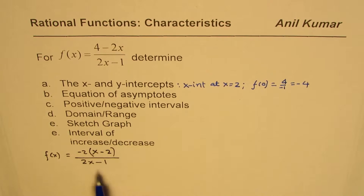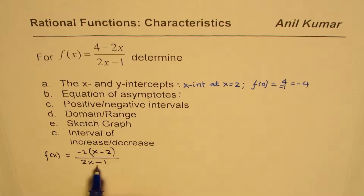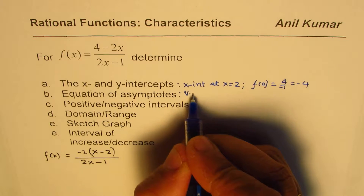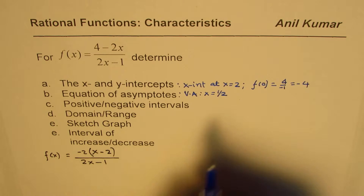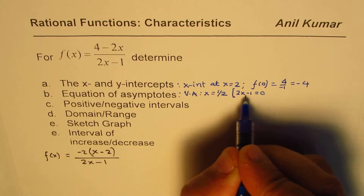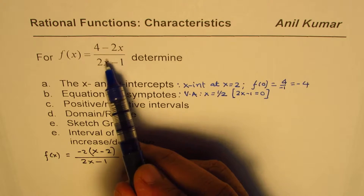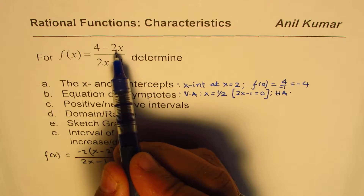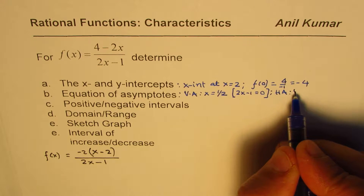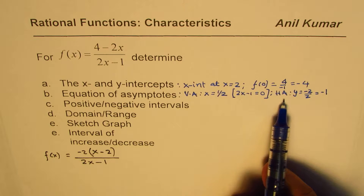For the equation of asymptotes: the denominator 2x minus 1 equals 0 at x equals one-half, giving us the vertical asymptote at x = 1/2. Since the degree of the numerator and denominator are the same, the horizontal asymptote is the ratio of leading coefficients, which is minus 2 divided by 2, giving y = minus 1.